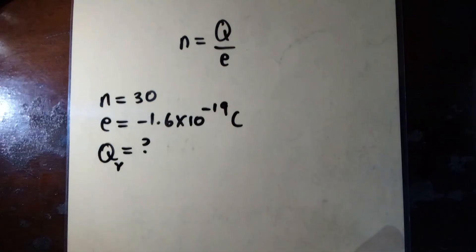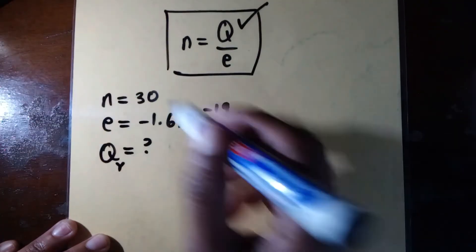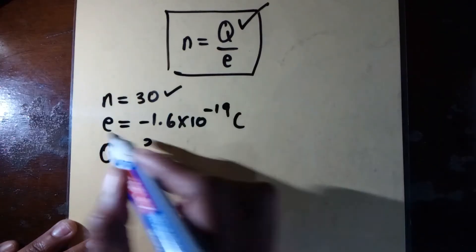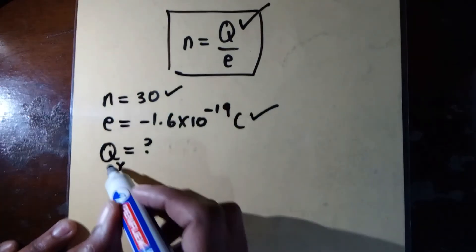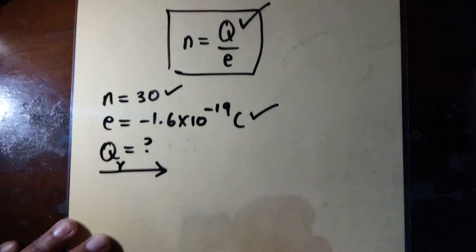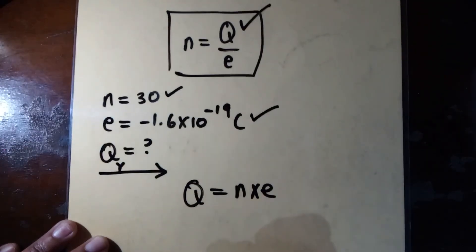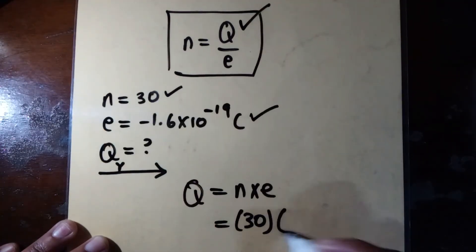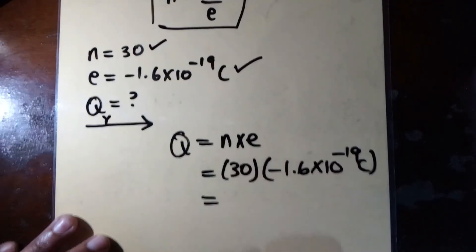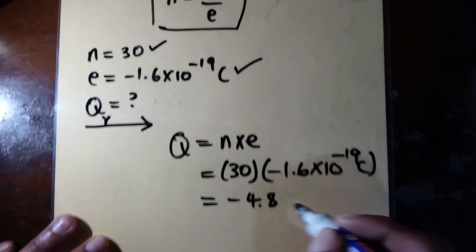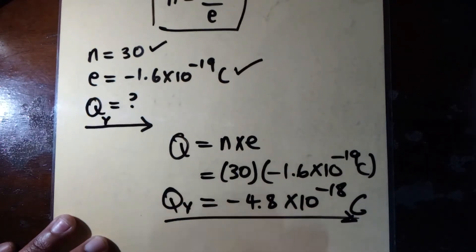For sphere Y, we have 30 electrons and the charge on a single electron is negative 1.6 multiplied by 10 to the power of minus 19 coulombs. Using Q = n × e, with n = 30, we get Q = 30 × (−1.6 × 10⁻¹⁹), which gives negative 4.8 multiplied by 10 to the power of minus 18 coulombs. That is the charge on sphere Y.